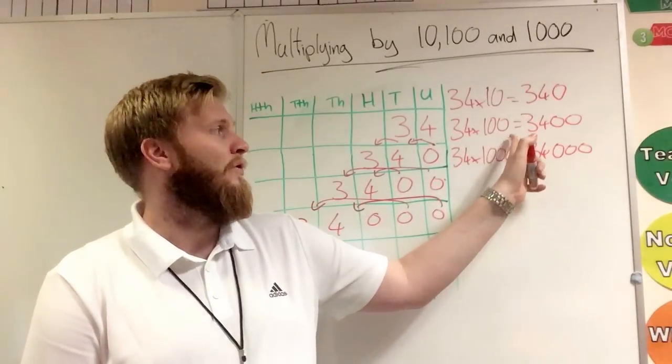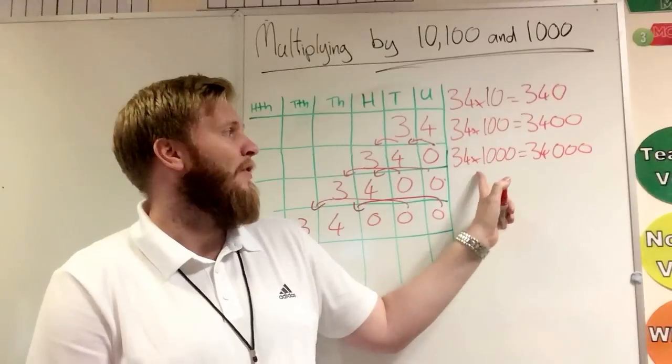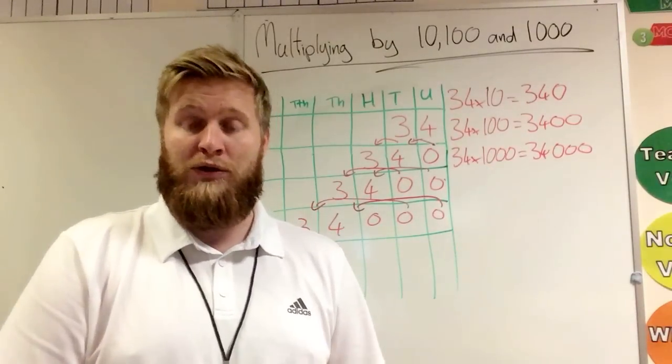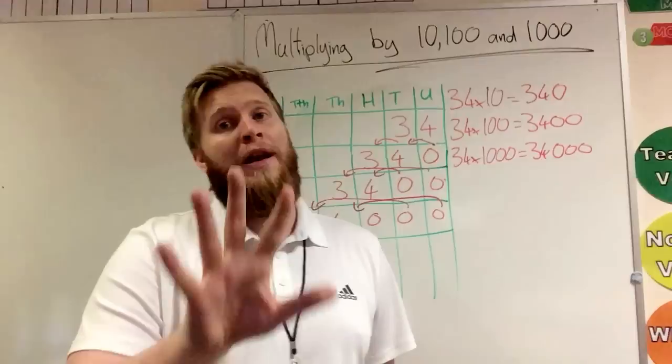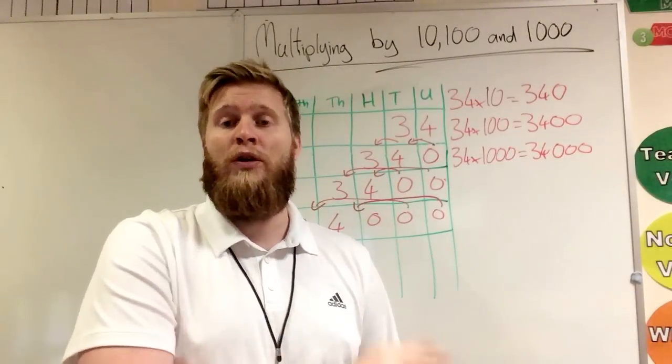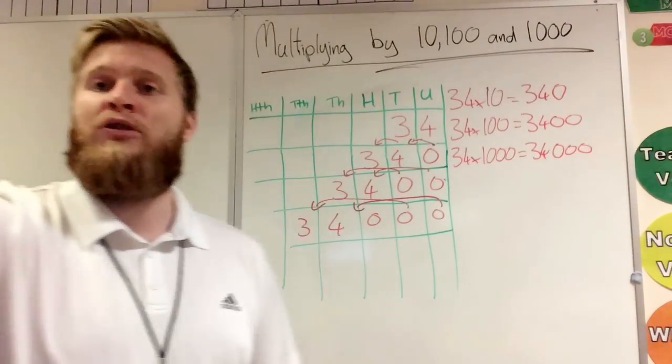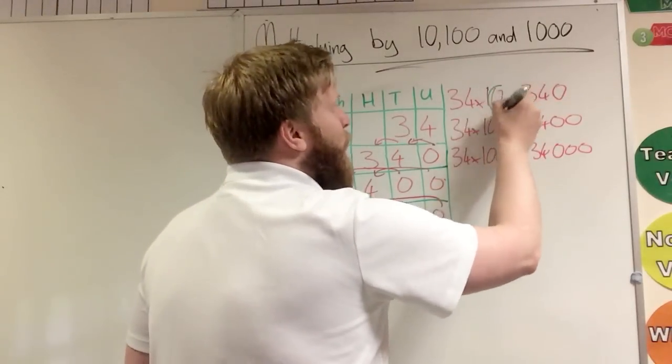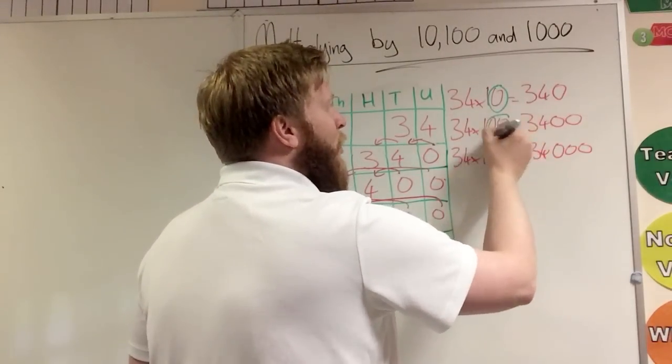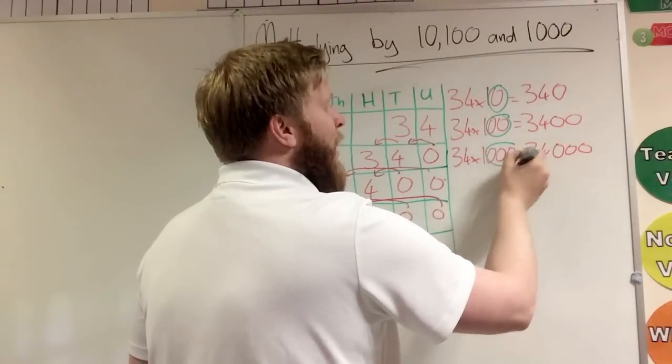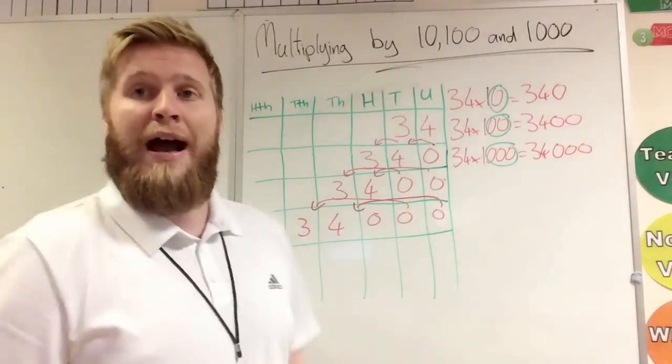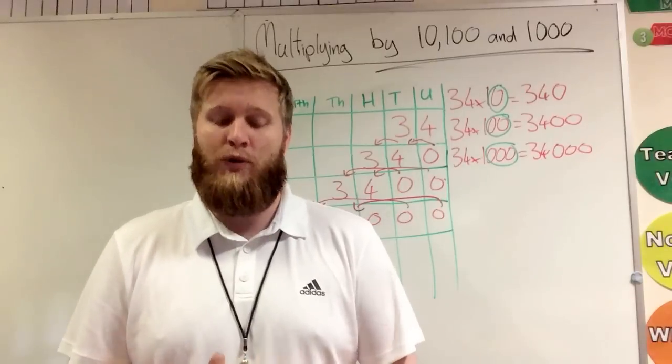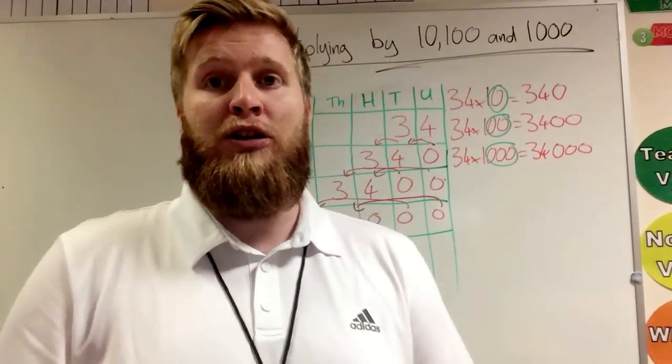34 times a hundred would be 3400, and 34 times a thousand would be 34000. So we can only add them zeroes if it's a whole number. Now to remember how many zeroes to add, it's easy. Ten has one zero, so we add one zero. Hundred two, so we add two. And a thousand three, so we add three.